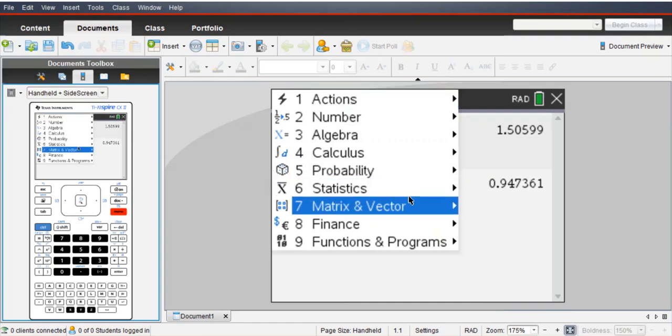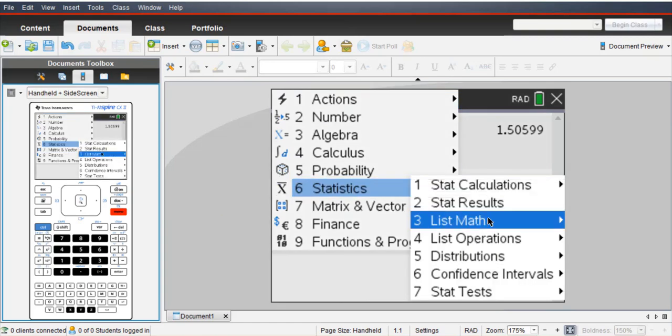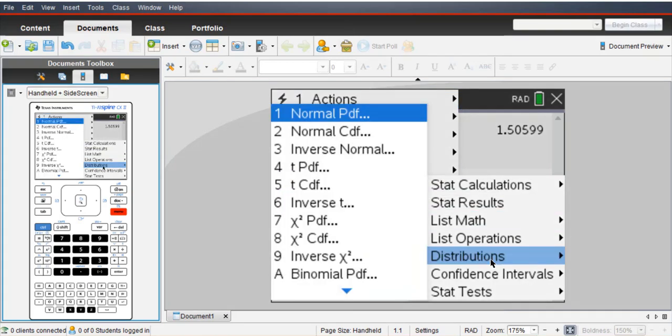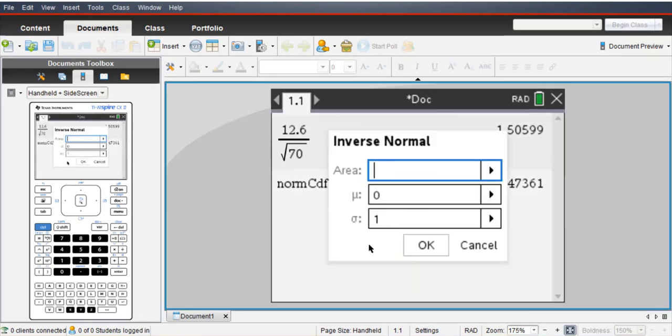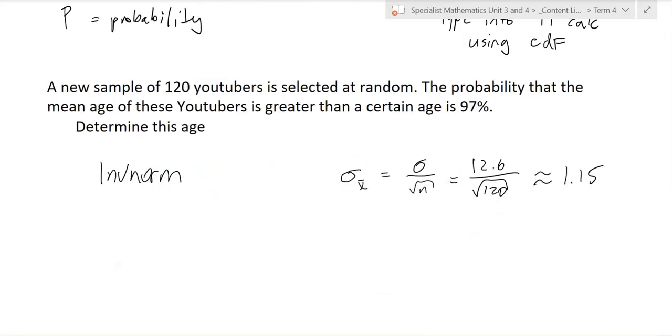So if you go menu, stats, distributions, inverse normal. So before you do inverse norm, probably need to look at visually what this is. So this is a normal curve. This is the mean.